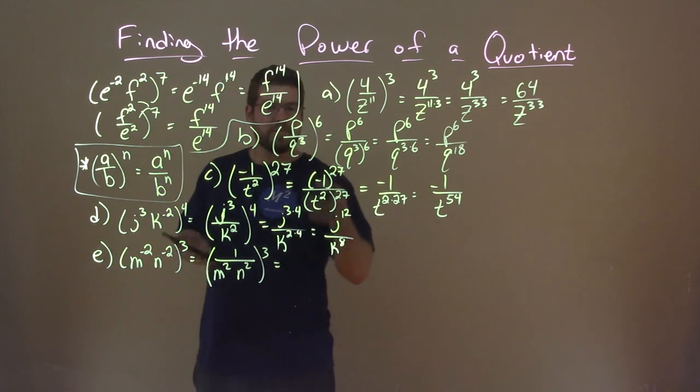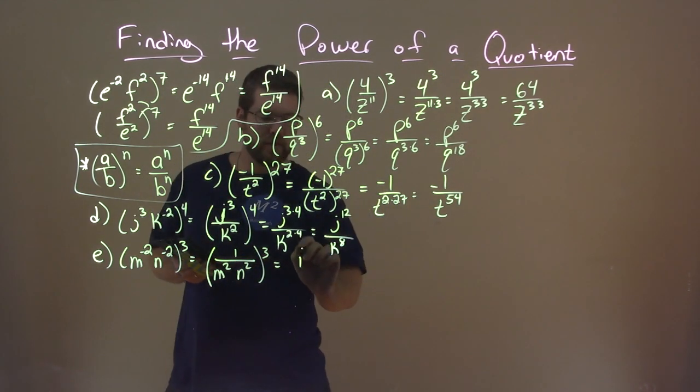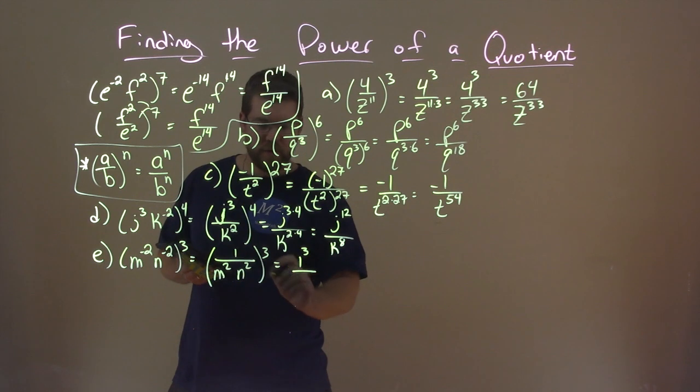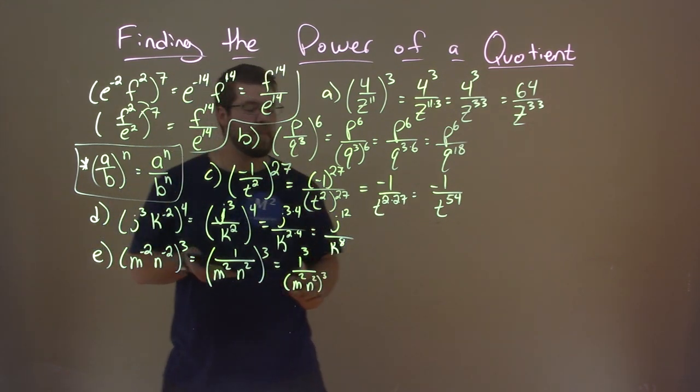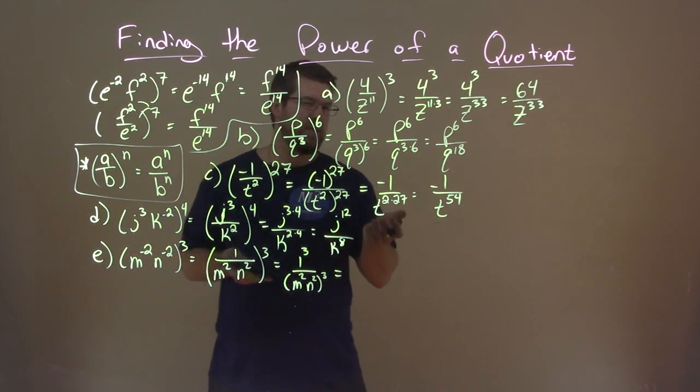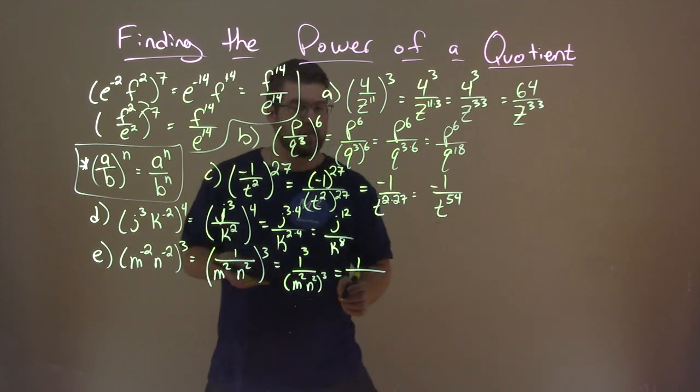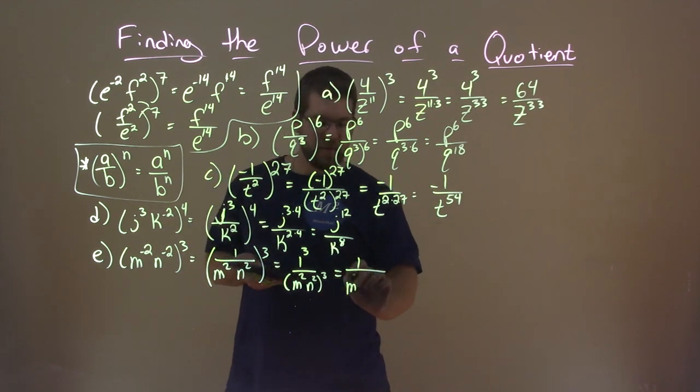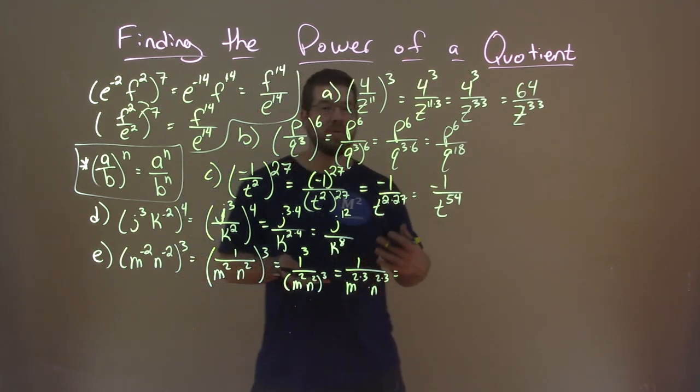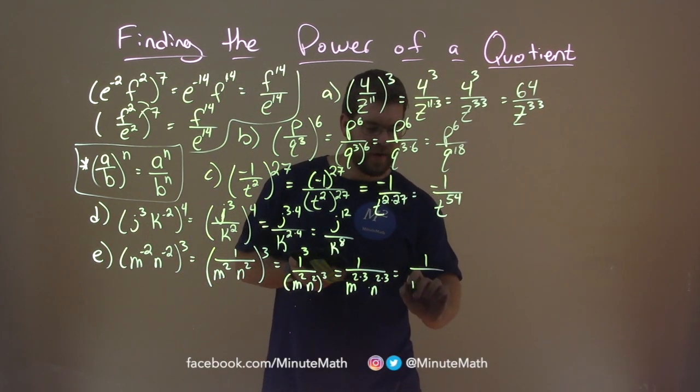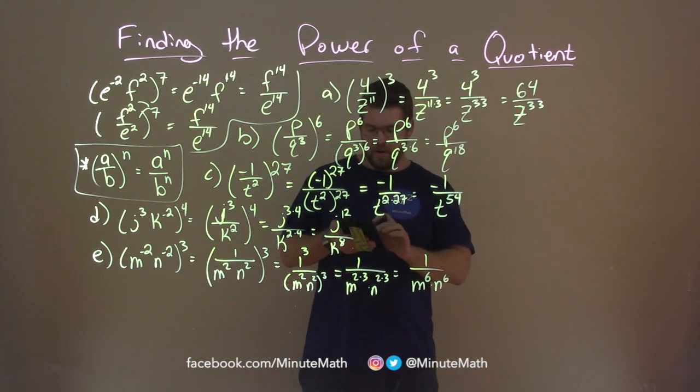Break it out here. Just use the power of a quotient rule. We have 1 to the 3rd power over m squared, n squared. Show all of our steps to the 3rd power. Now we know 1 to the 3rd power is just 1. And we multiply that 3rd power to both parts on the inside. So we have m to the 2 times 3 times n to the 2 times 3. And 2 times 3 is 6. So we have 1 over m to the 6th power times n to the 6th power. And there we have our answer.